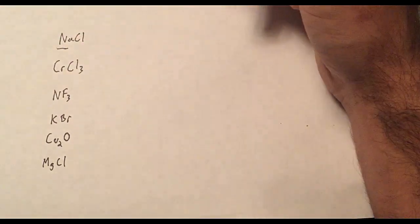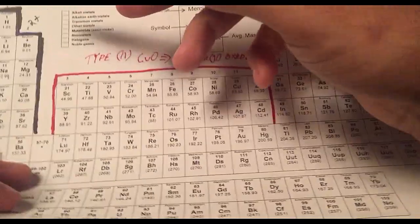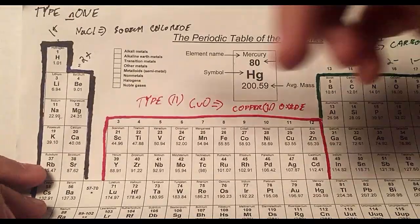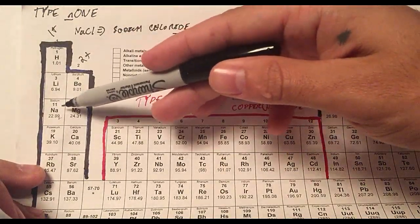We have first represent, recognize the type. So we're going to look at the first atom, always, right? Sodium. We go like this. Is sodium here, here, or here? Well, sodium's right here, right?